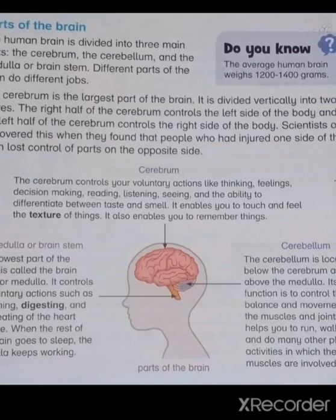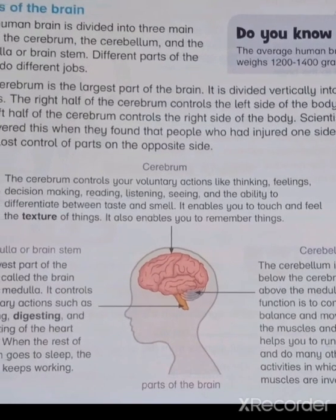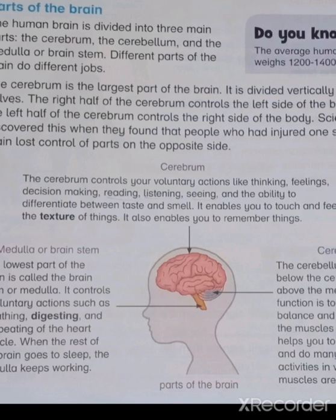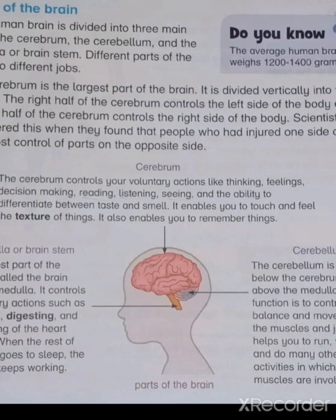The cerebrum is at the top of the brain. The cerebrum controls voluntary actions — that is, actions that are in your control — like thinking, feeling, seeing, reading, listening, and the ability to differentiate between taste and smell. It also enables you to touch and feel the texture of things, and to remember things.